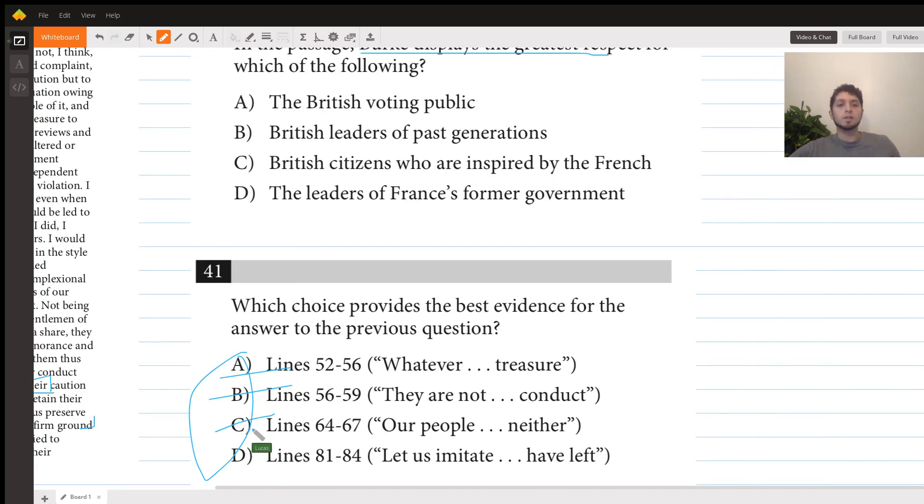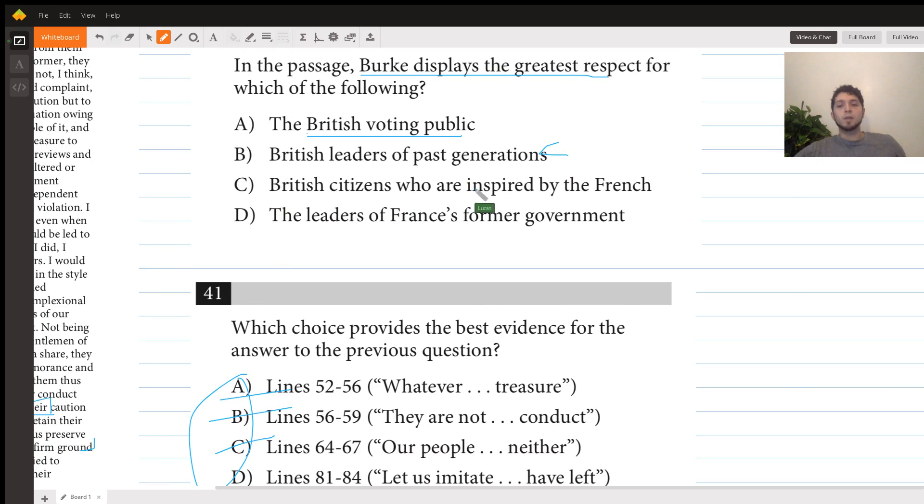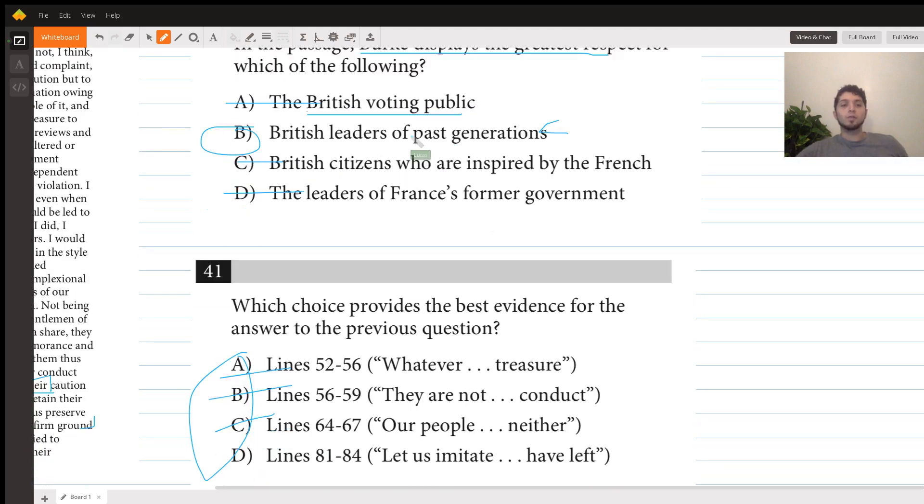So this is a good answer choice and we're going to look for something that would be our forefathers. British voting public? Not something he has immense respect for - he's talking about the forefathers. British leaders of past generations? That pretty much seems to be exactly what we're looking for. British citizens who are inspired by the French? No, he's telling us not to be inspired by the French but to look to the British constitution. And then D says the leaders of France's former government? Nope, he's talking about the leaders of Britain's former government, or at least leaders of past generations. So that's going to be answer choice B for question 40, and answer choice D as our correct answer for question 41.